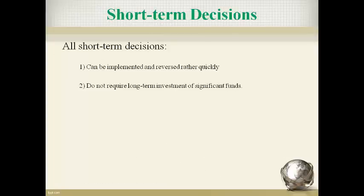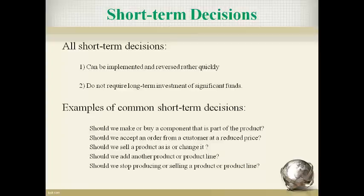Short-term decisions have two common characteristics. A short-term decision can be implemented quickly and reversed quickly if results are not as expected. Short-term decisions can be easily reversed because they do not require a large investment. Short-term decisions often impact a company's product line. Take a moment and read through the following examples of short-term decisions.